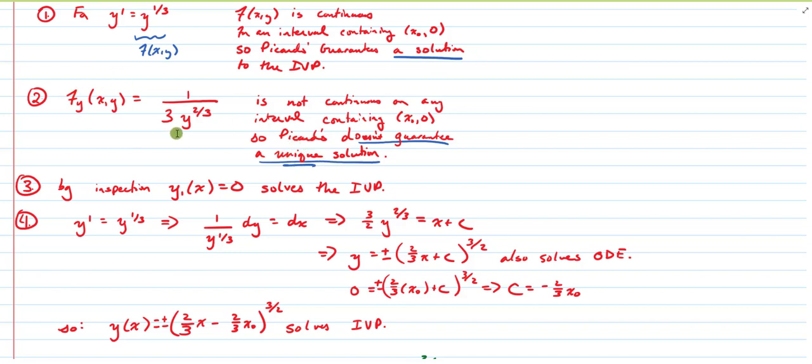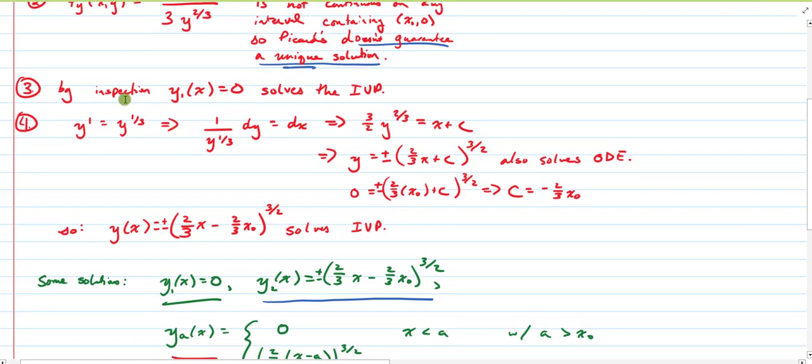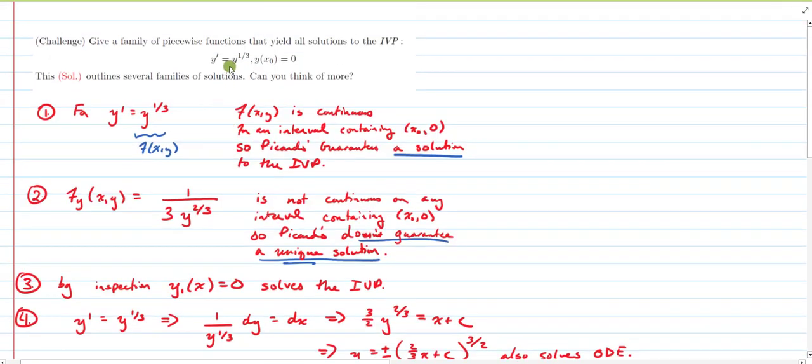So what I went ahead and did then is found several of the solutions. By inspection, I just found one solution was y of x equals zero. Notice that if I just take the zero function and take its derivative, this gives me a true statement here. And certainly for any x-coordinate that I choose, the y-coordinate of that position, that zero function is zero.